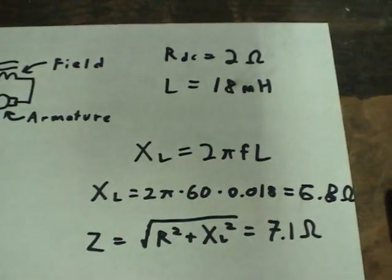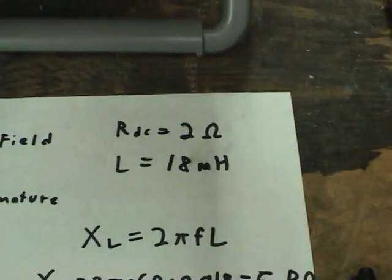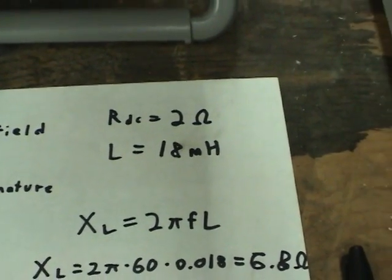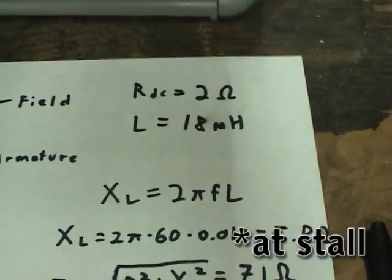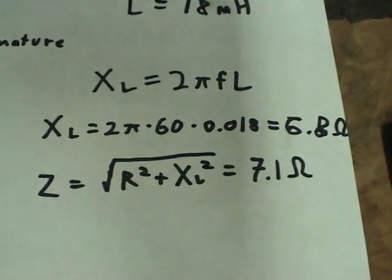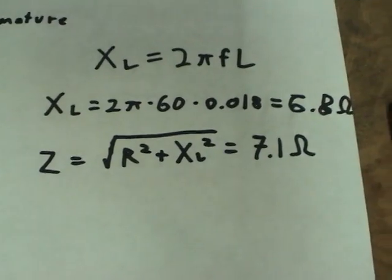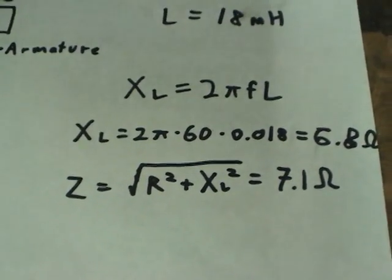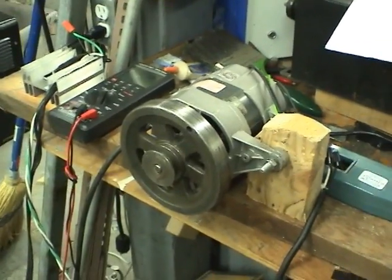So if you connect the motor to 120 volts DC, you will get about 3.5 times as much current through it as if you connected it to 120 volts 60 hertz AC. So there's a significant performance gain from running the motor on DC, as we saw earlier when it spun up much faster on DC.